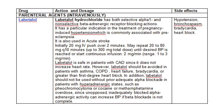Labetalol can be given as a 20 mg IV push over two minutes, repeated at 20 to 80 mg every 10 minutes, with the dose titrated according to BP response. Contraindications include severe cardiac failure, asthma, COPD, and severe bradycardia — these are relative contraindications to consider. Labetalol is the most useful drug in the emergency room for most hypertensive emergencies, except pheochromocytoma (where alpha blocker comes first) and eclampsia (where magnesium sulfate is used first).